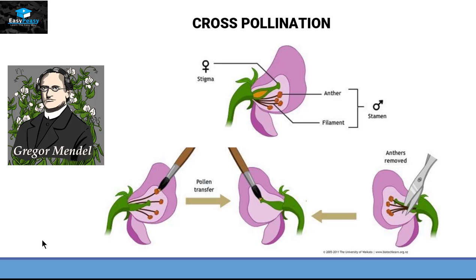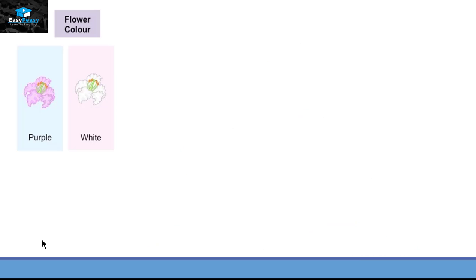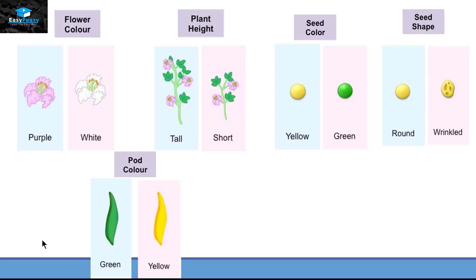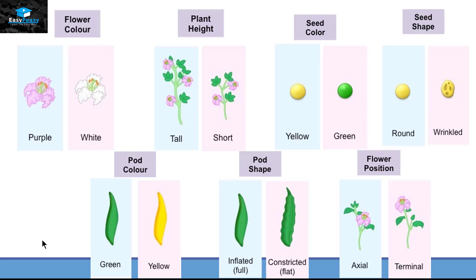Pea plants have seven different types of characteristics. That includes flower color can be purple or white, the plant height can be tall or short, the seed color can be yellow or green, the seed shape can be round or wrinkled, the pod color can be green or yellow, the pod shape can be full or flat, and flower position can be axial or terminal.